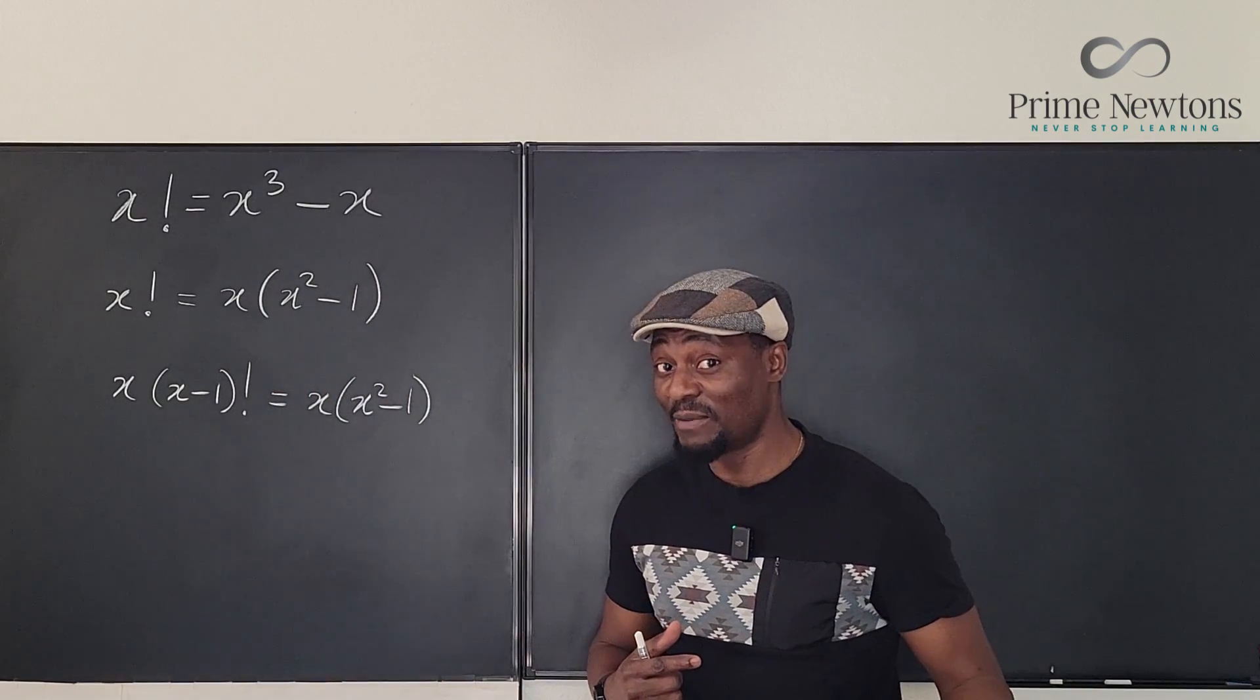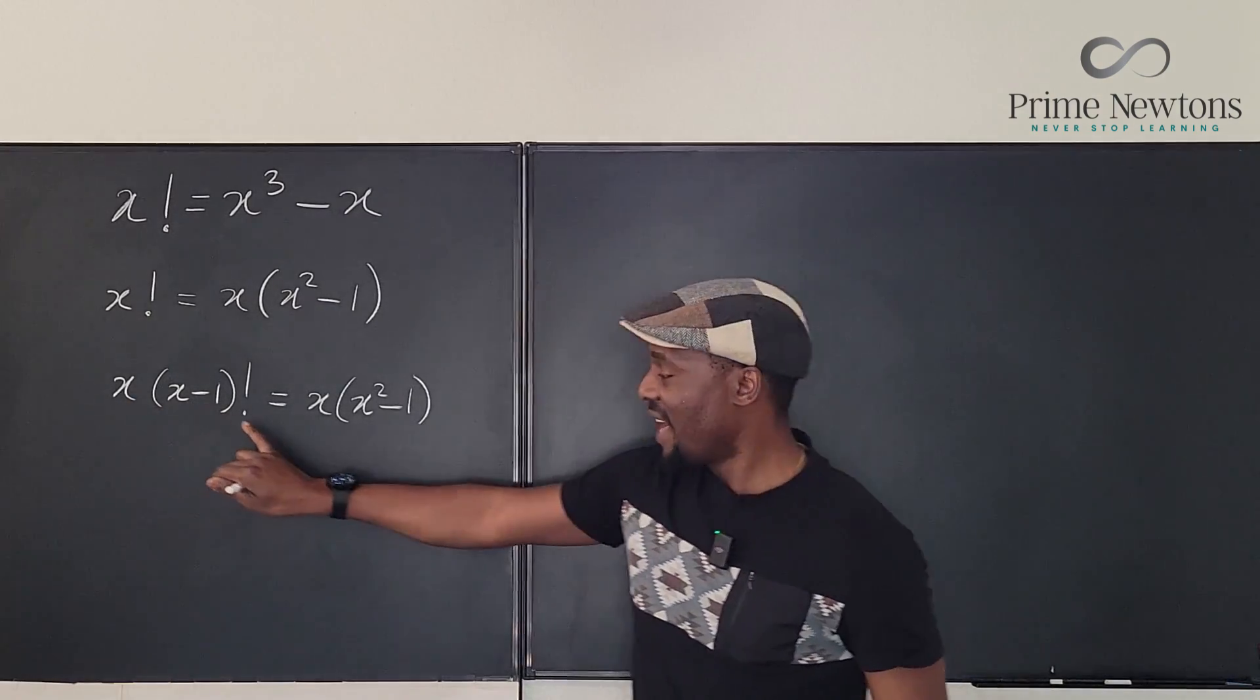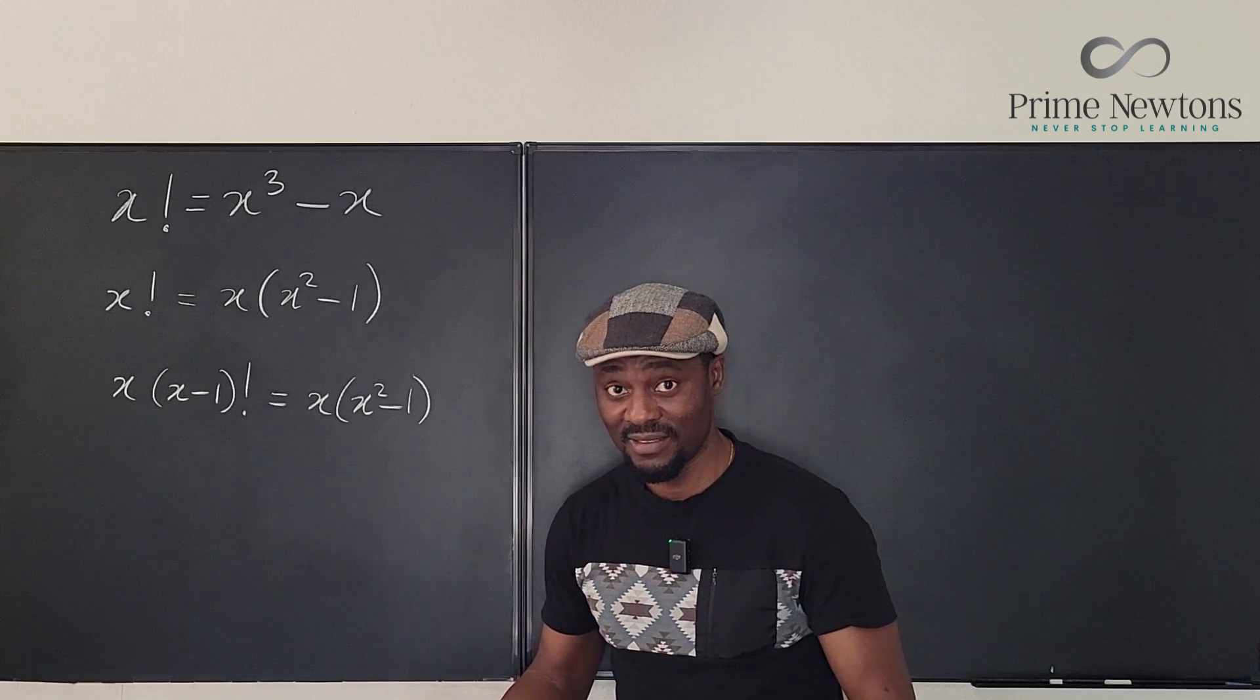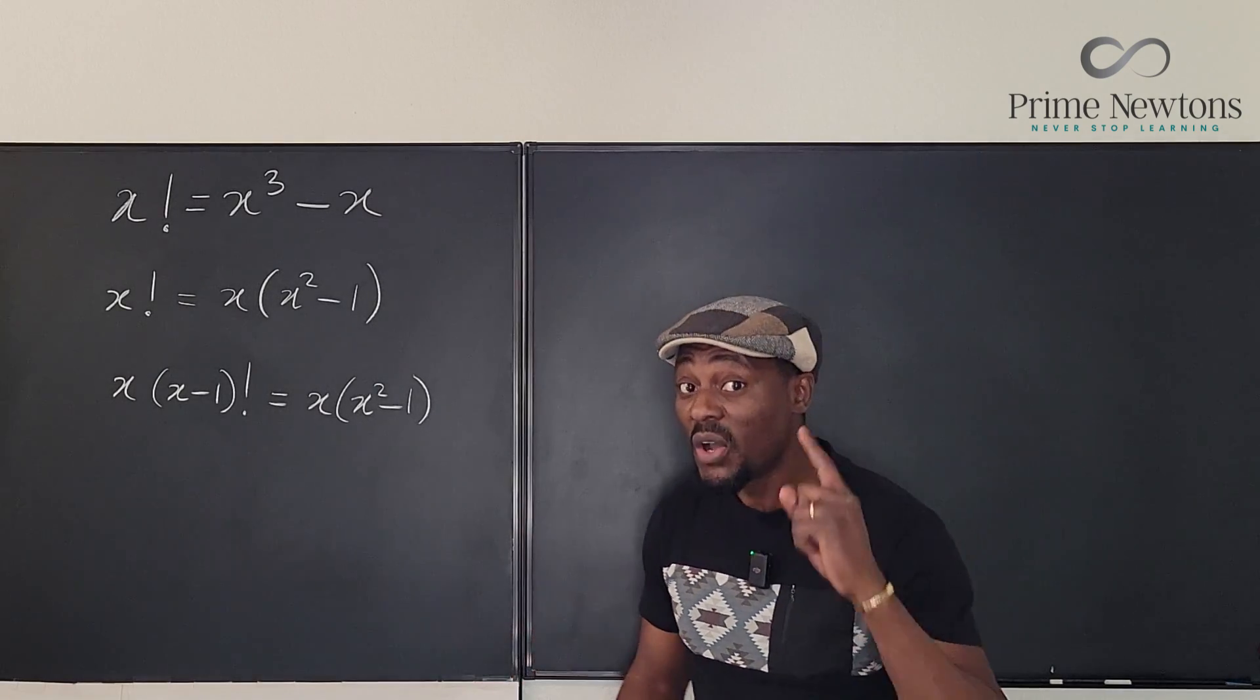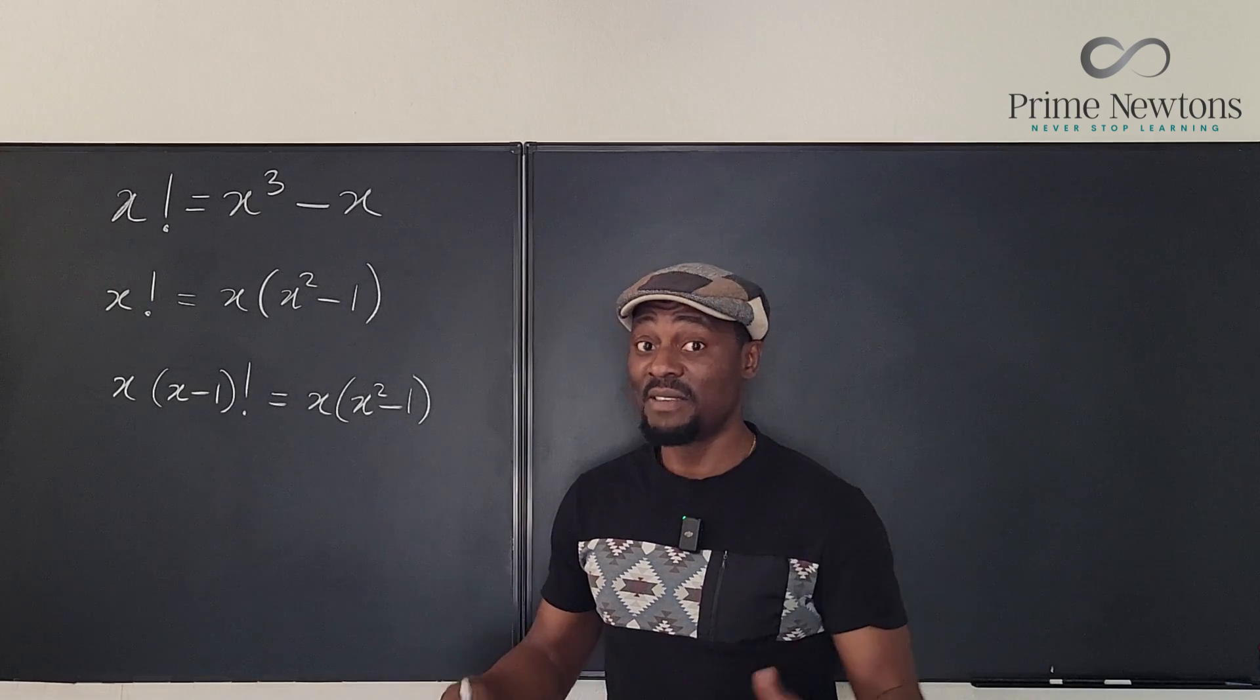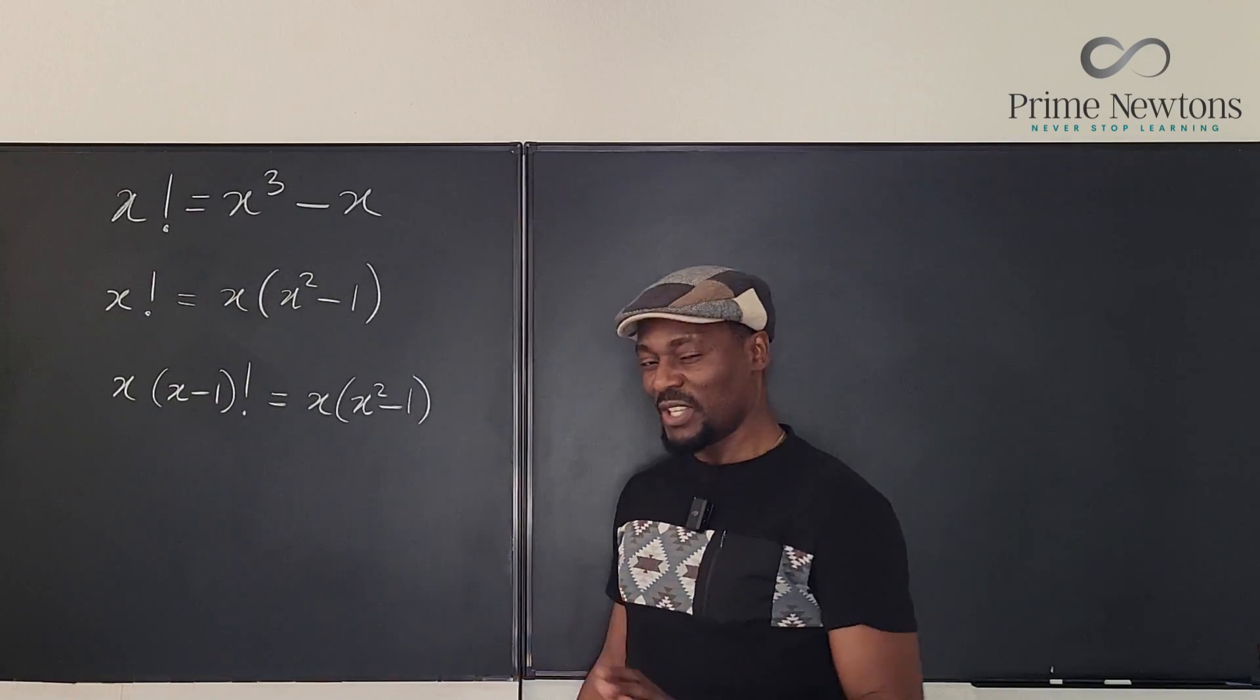So this is the next thing you have to start thinking about. I have x multiplying something here. I have x multiplying something here. I can easily divide both sides by x. That you can do. As long as you can guarantee that x is not 0. Because if x is 0, then you cannot do that. You can't divide by 0. So we're going to say, can x be 0? Is it possible?